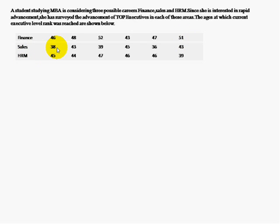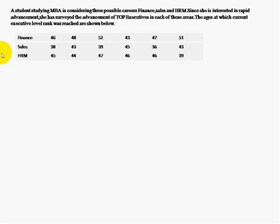In the sales field, at age 38 he got the executive level rank, the second person at 43, and so on. Similarly, in the HRM profession, at age 45 he got the executive level rank, the second person at 44, and the last person at age 39 got the executive level rank.